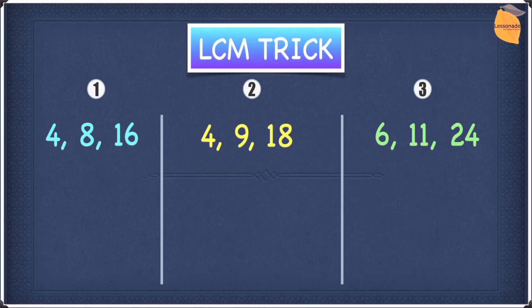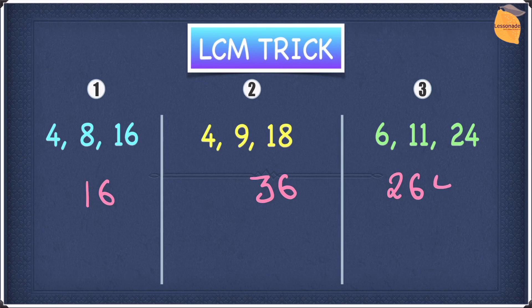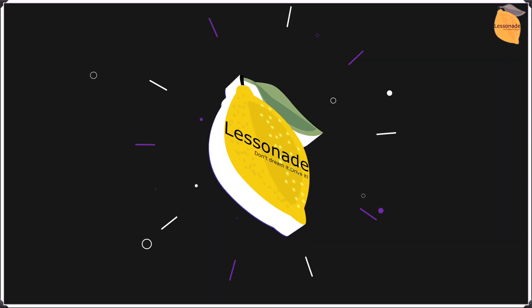Did you guys know that the LCM for 4, 8, 16 is 16; the LCM for 4, 9, 18 is 36; and the LCM for 6, 11, 24 is 264? If you guys are wondering how I did that, don't worry — I will show you in this video.